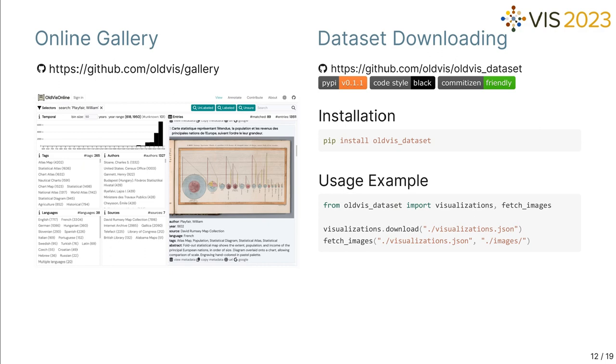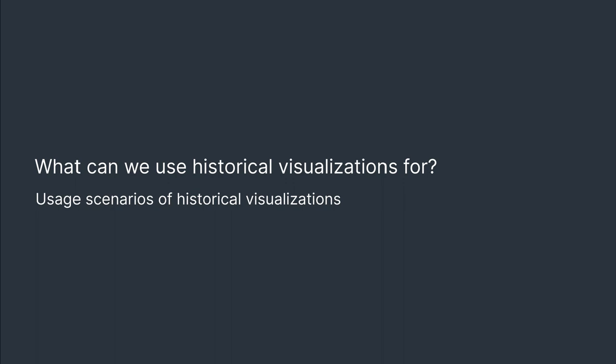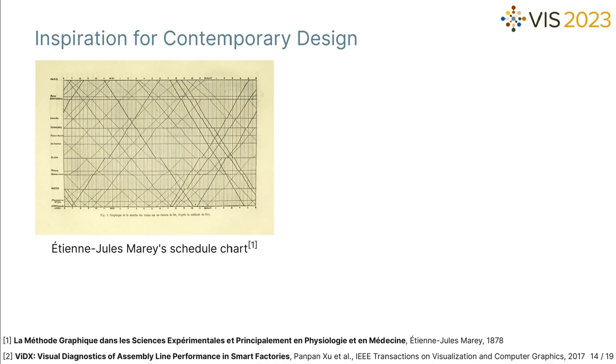We have built an online gallery for browsing the images and metadata. Users may also download the metadata and images with the Python package we developed. Then, what can we use historical visualizations for? How may visualization and history researchers use them? I want to share some interesting usage scenarios that we envision. Firstly, historical visualizations can serve as design resources for inspiring contemporary visualization techniques.